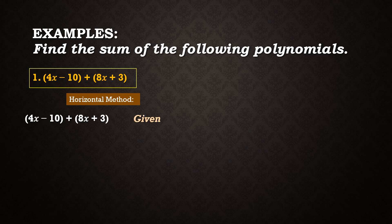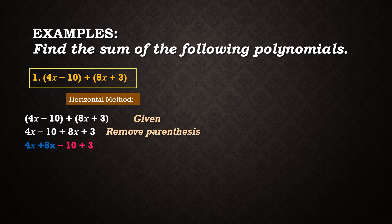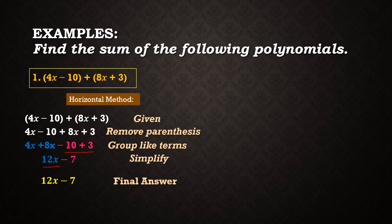For the horizontal method, we first copy our given. Then we combine or remove the parentheses, so we have 4x minus 10 plus 8x plus 3. Then we group like terms, putting together 4x and 8x, and negative 10 plus 3. After that, we combine them or apply the operation. 4x plus 8x is equal to 12x, and negative 10 plus 3 is equal to negative 7. Since we cannot combine 12x and negative 7, our final answer is 12x minus 7.